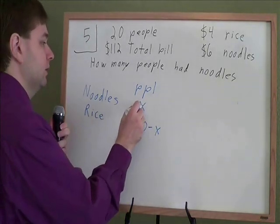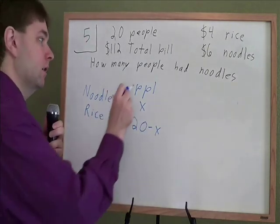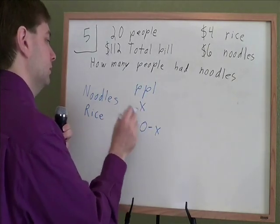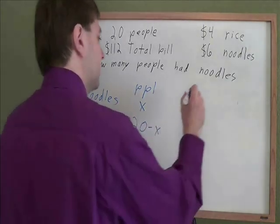Think about it. If 5 people have noodles, then 20 minus 5 or 15 will have the rice. So now that we know how many people, or at least how we're going to say how many people ate each food, we've got to look at the total price of each.